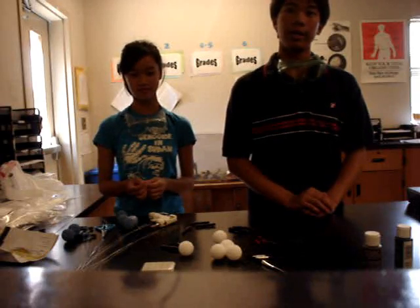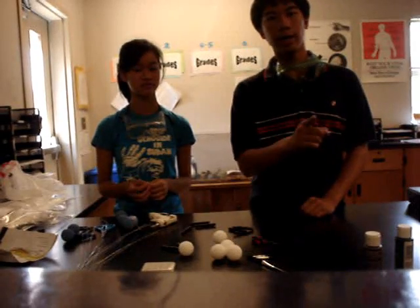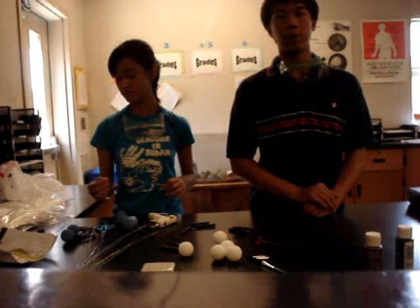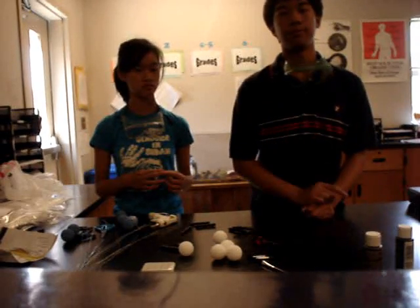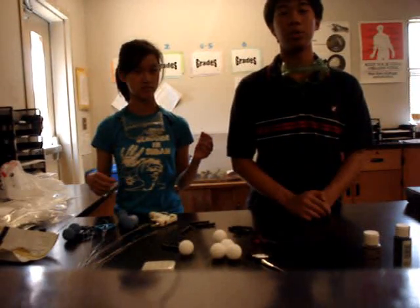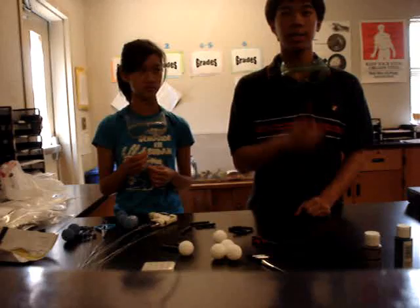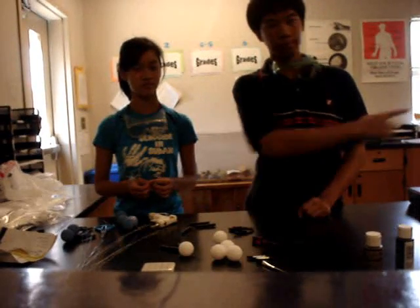If the molecule that the cell wants to let in is too big for the membrane protein, then there is a process called endocytosis. Endocytosis is a process in which the cell membrane engulfs the target molecule and sucks it in. If it wants to kick something out of the cell that is too big for the membrane protein, it does exocytosis, where it kicks it out of the cell. Endocytosis is the opposite of exocytosis.